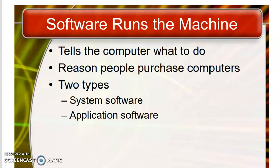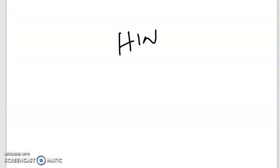Software is defined as a set of instructions that are given to the computer to solve a problem. In software, there are instructions, which are a step-by-step procedure to solve a problem. This software runs on hardware. All the tasks in a computer system are performed by hardware, and to run this hardware, we use software.